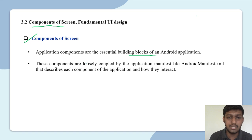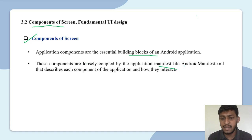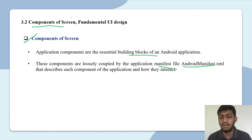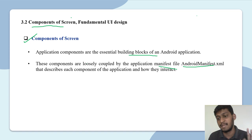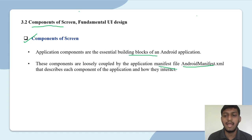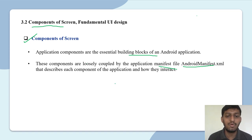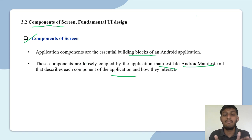These components are closely coupled by an application manifest file — which is AndroidManifest.xml. This file is closely coupled, meaning it is linked. The first activity that opens is defined in AndroidManifest.xml. Just remember that AndroidManifest.xml is closely coupled and linked to the components. It describes each component of the application and how they interact.